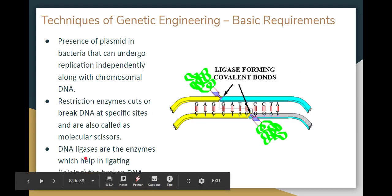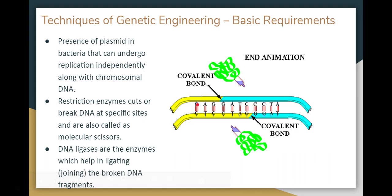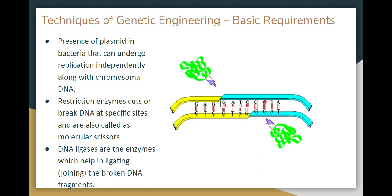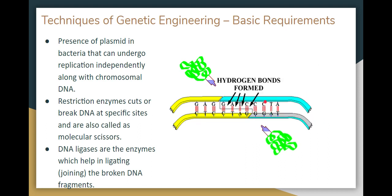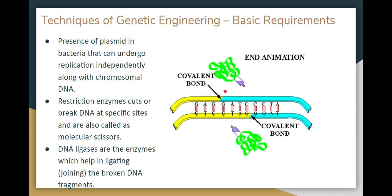The third tool is DNA ligase. For example, when DNA is broken, it can be joined back together. As you can see in this video, two broken DNA strands are joined — hydrogen bonds form first, and then DNA ligase forms the covalent bonds.